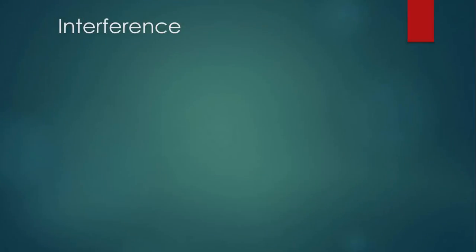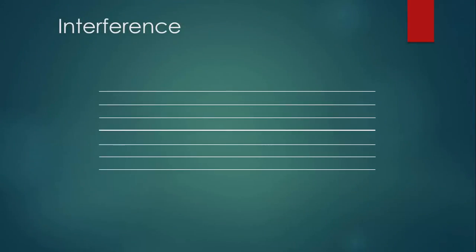There's a slightly different way that interference can happen. Here's a red pulse moving toward the right and a blue pulse moving toward the left, and now when they get together, their displacements are in opposite directions. We still need to combine those displacements to figure out what the resulting wave will look like. In this case, we can think of the red pulse as having a displacement of negative one and the blue pulse as having a displacement of positive two — put those together, you get positive one. So these two pulses kind of cancel each other out a little bit.